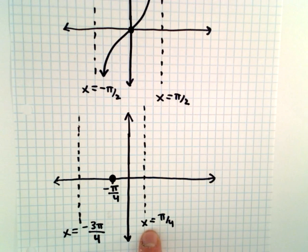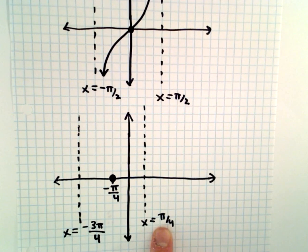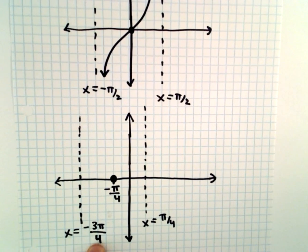So there's our vertical asymptotes, x equals pi over 4, x equals negative 3 pi over 4.